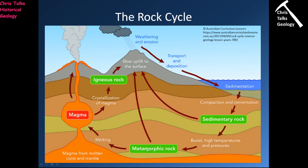Once we have a sedimentary rock, we can uplift it, expose it at the surface, and erode it to start the cycle again. Or we can bury it, increase pressure and temperature, and eventually that sedimentary rock will metamorphose into a metamorphic rock. That metamorphic rock can be uplifted and eroded, or we can keep increasing the temperature until it melts, producing a magma. That magma either crystallizes in the crust — forming something like granite — or erupts as lava, cools, and the cycle starts again. This is a closed system: every time we destroy something, we create something to take its place.